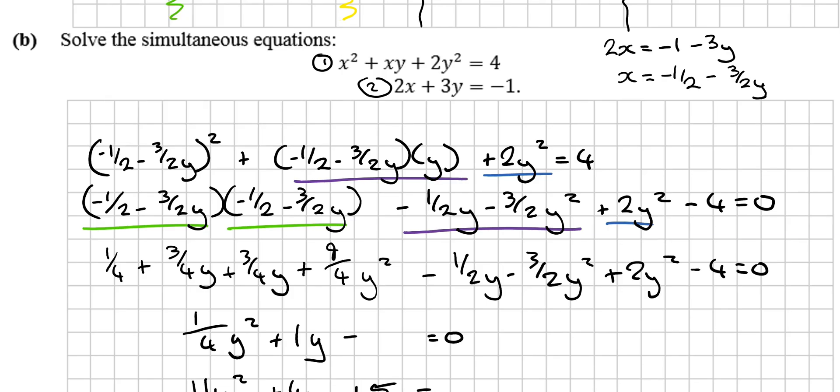So we've got a simultaneous equation. I know it's a simultaneous equation because I've got two equations. Equation 1 and equation 2. And I know this is a non-linear. The reason I know this equation 1 is a non-linear is because the powers are not 1. See the power here is squared. The power here is squared. This is a linear equation right here.